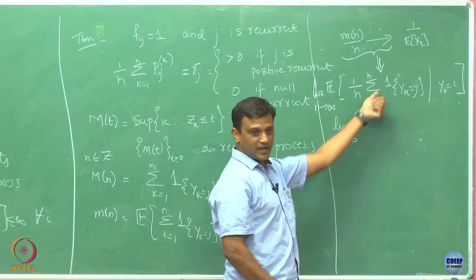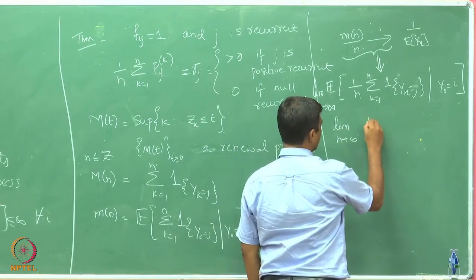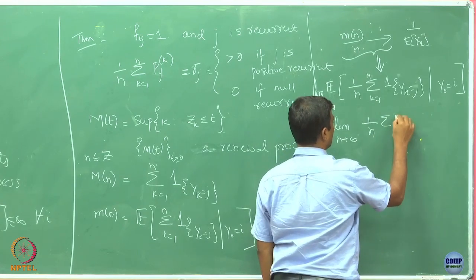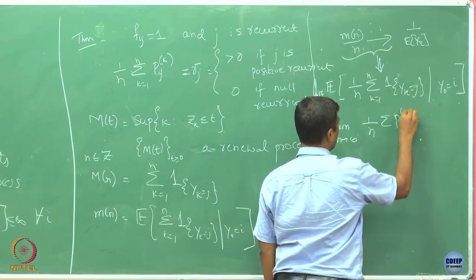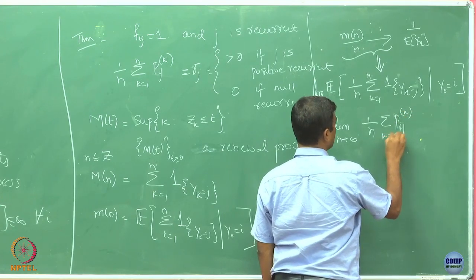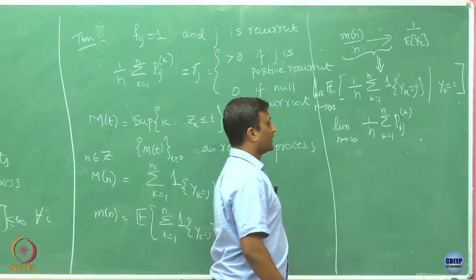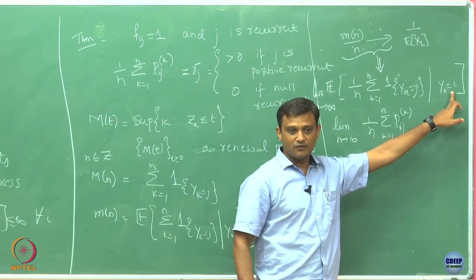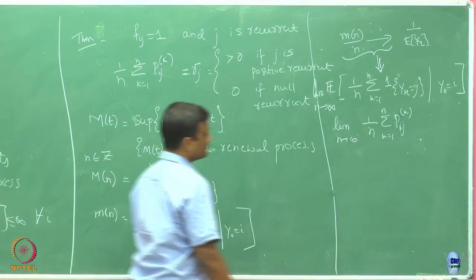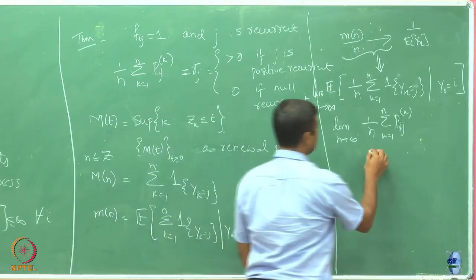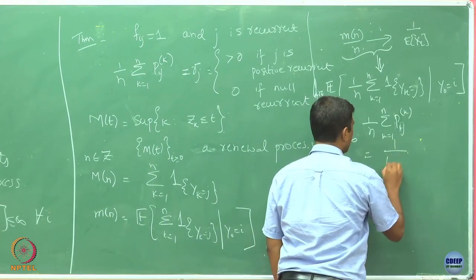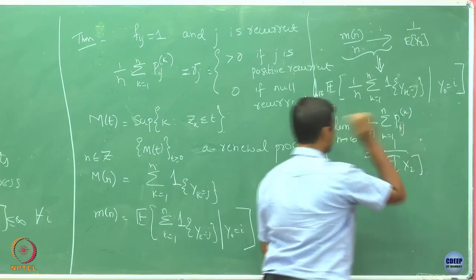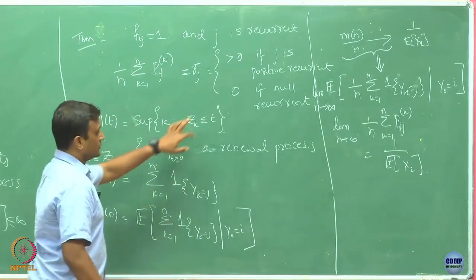So I can directly plug in, and what I get is basically (1/n) times the sum of P_{ij}^{(k)} for k equals 1 to n, where the conditioning on Y_0 equals i is why we have the i subscript. Now, we know that this limit is equal to 1 upon expectation of X_2.